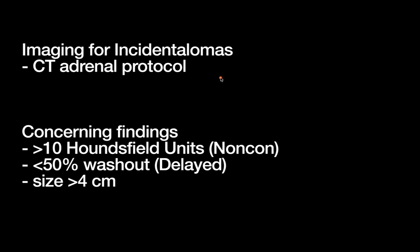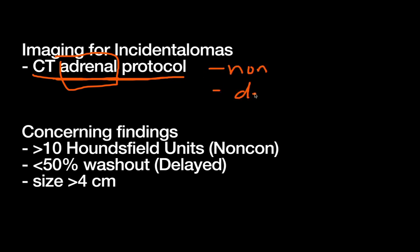For imaging of incidentalomas, if a mass was just discovered on a normal CT, you want to make sure you get a good CT adrenal protocol. That means thin cuts through the adrenal glands for a really good look, and very specific phases: a non-contrast phase, a venous phase, and then a delayed phase. There are specific findings in each of these phases that are critical for working up an adrenal mass.